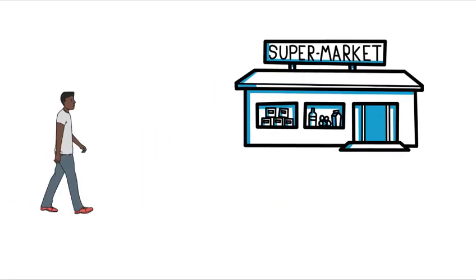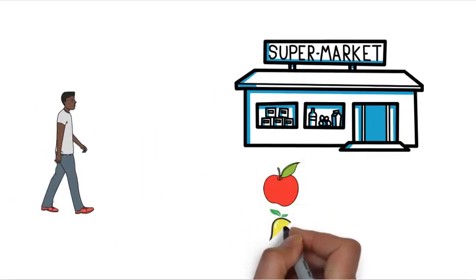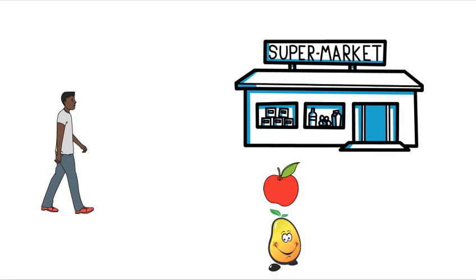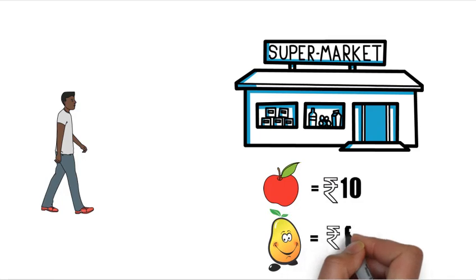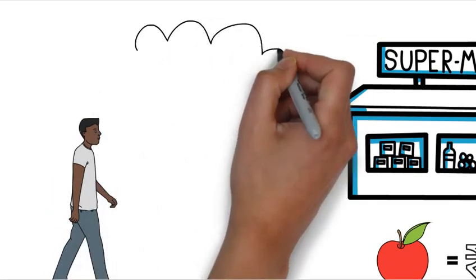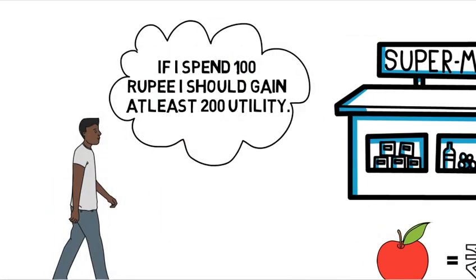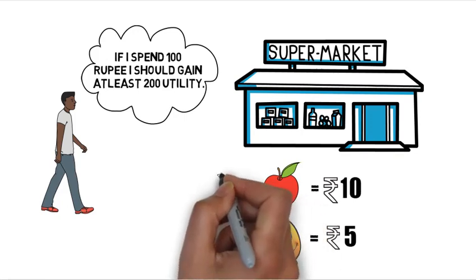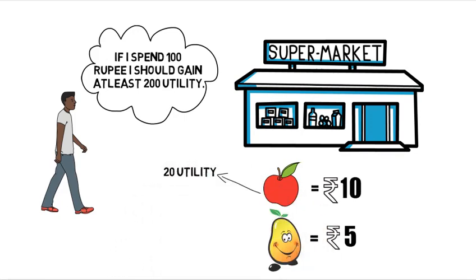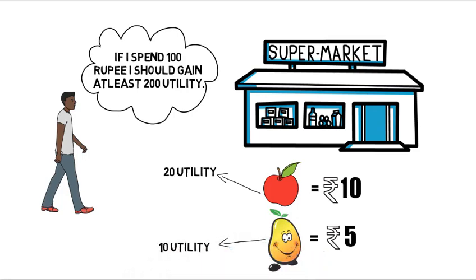Say one day you go to a supermarket with Rs.100 to buy apples and mangoes. Apples cost Rs.10 whereas mangoes cost Rs.5. Ideally, you buy fruits that give you at least 200 units of utility with Rs.100, and this is what you wish to do now as well. You know that one apple gives you 20 units of utility and one mango gives you 10 units of utility.